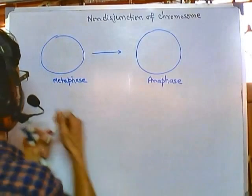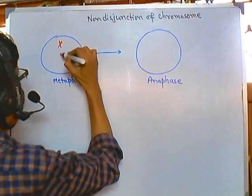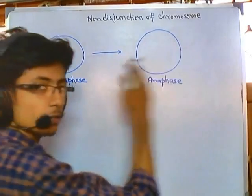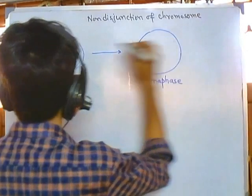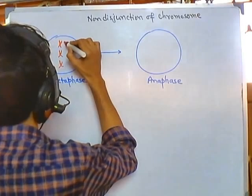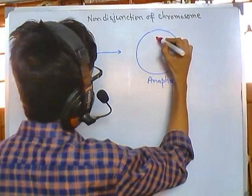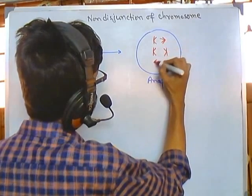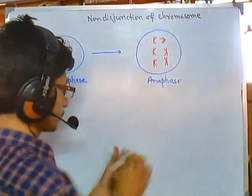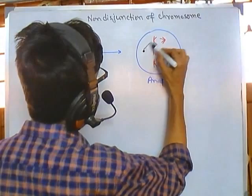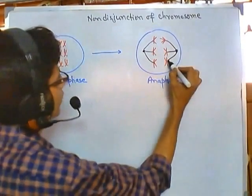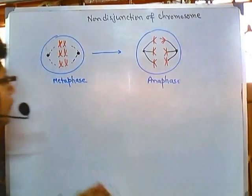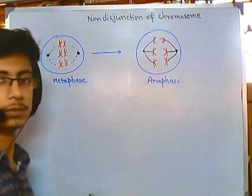In metaphase, all the chromosomes start to align at the center of the cell. After that, during anaphase, they start to separate from each other. So the separation begins. The alignment is done in metaphase, and then the spindles attach to the chromosomes and drag them in different orientations. That is how the segregation occurs — first alignment at the metaphasic plate, then separation from the metaphasic plate.